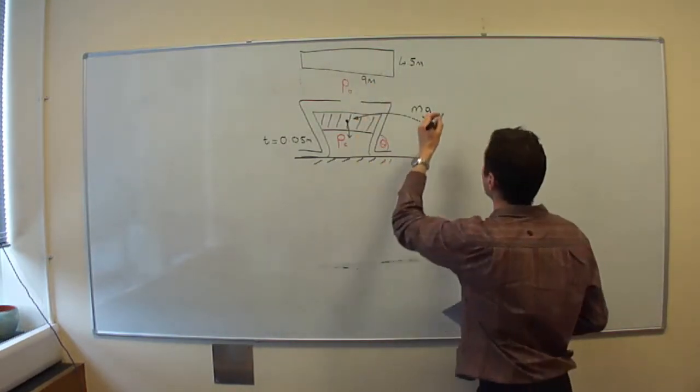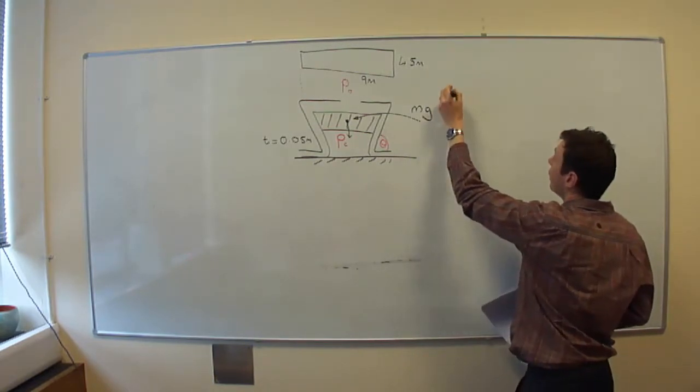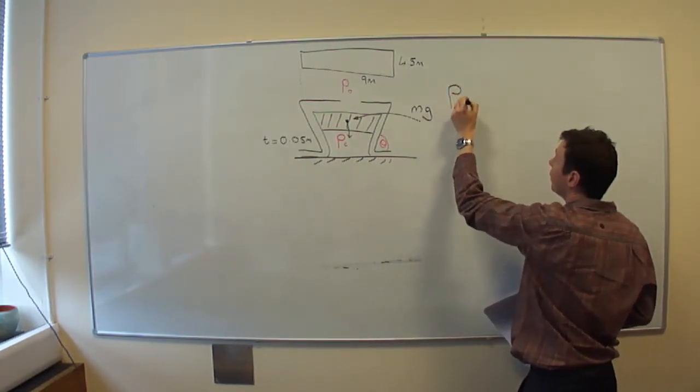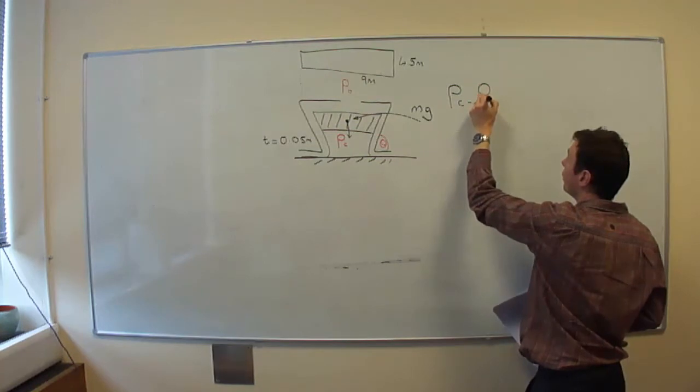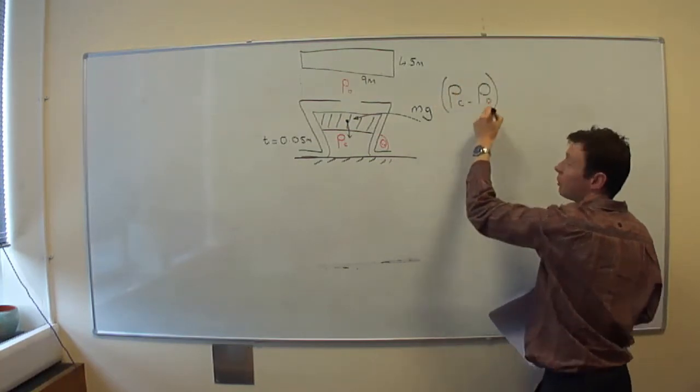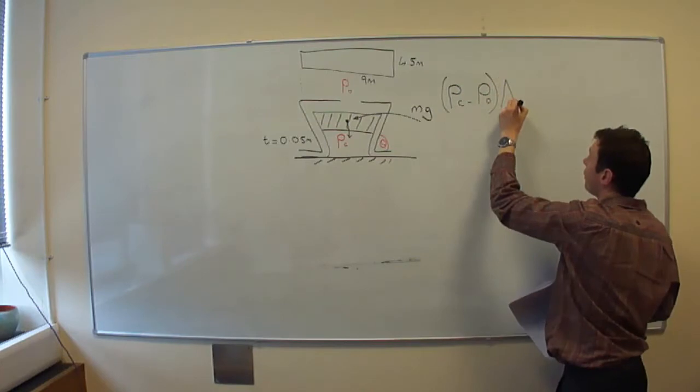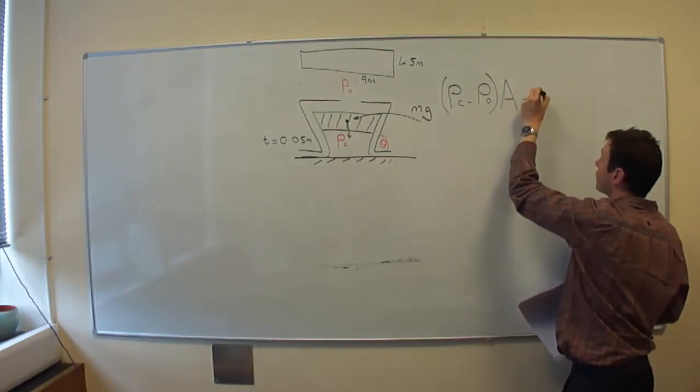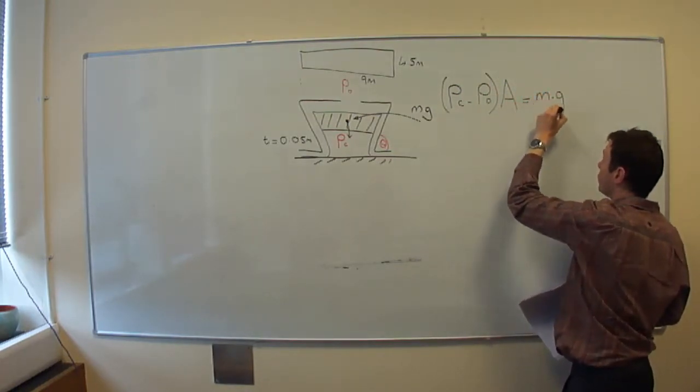So we can just write Pc minus P0 multiplied by the area equals m times g.